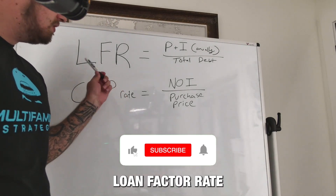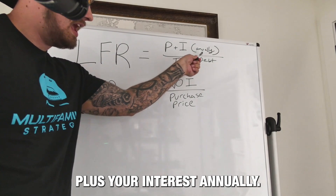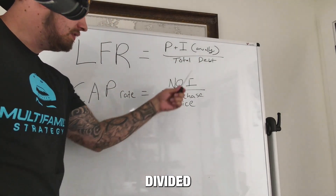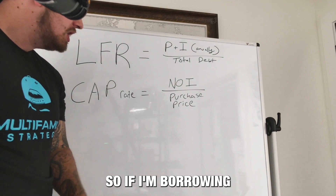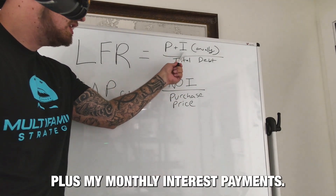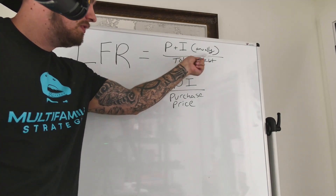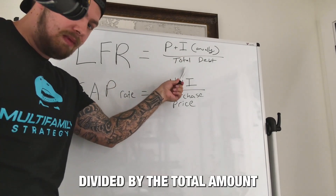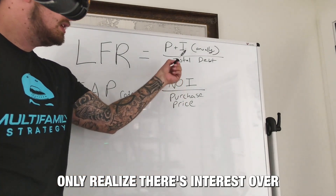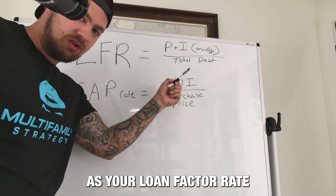If you haven't heard of it: loan factor rate. That is your principal plus your interest annually. If you're looking at a monthly, multiply by 12 divided by your total amount of debt. If I'm borrowing a million dollars, I'm going to take my monthly principal payments plus my monthly interest payments, annualize them — multiply by 12 — divided by the total amount that we owe. If you're doing interest only, realize that's just interest over total debt. Your interest-only interest rate is the same as your loan factor rate.